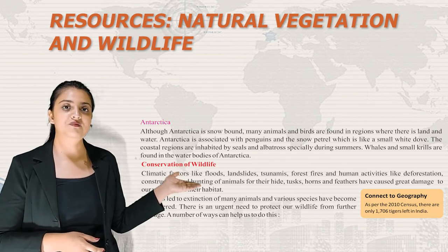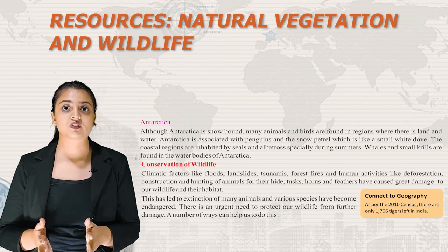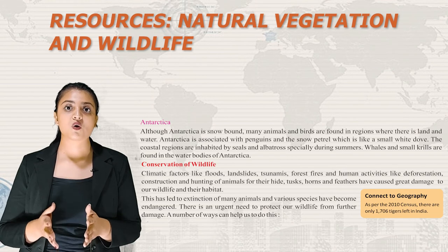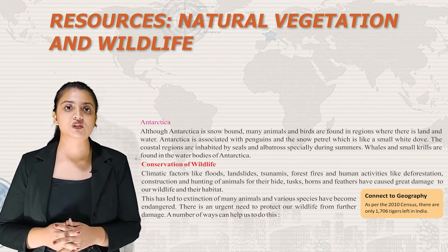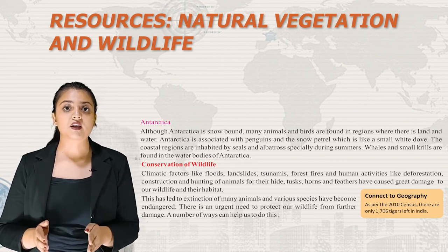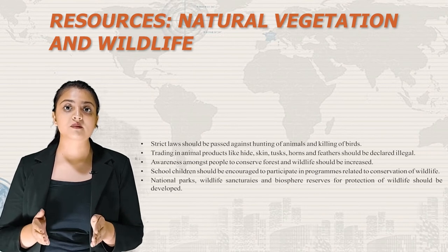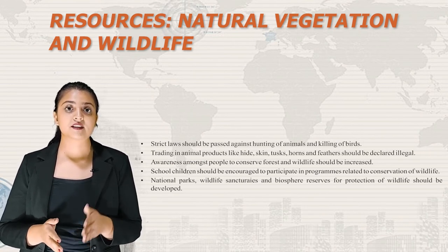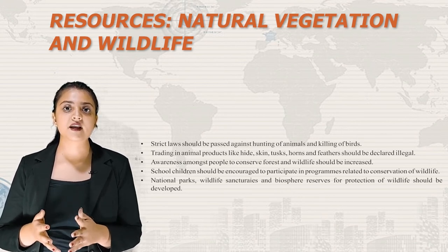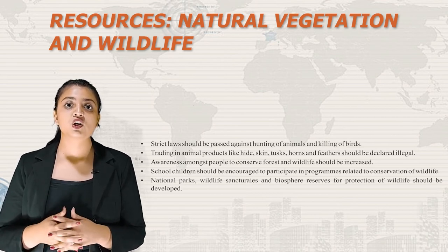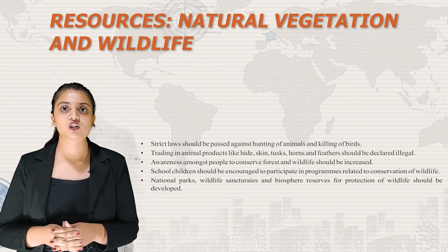Climatic factors like floods, landslides, tsunamis and forest fires, and human activities like deforestation, construction and hunting for hide, tusks, horn and feathers have caused great damage to wildlife. This has led to extinction of many animals and endangered many species. Conservation measures include: passing strict laws against hunting and killing of birds; declaring trade in animal products like hide, skin, tusks, horn and feathers illegal; increasing public awareness; encouraging school children to participate in conservation programs; and developing national parks, wildlife sanctuaries and biosphere reserves.